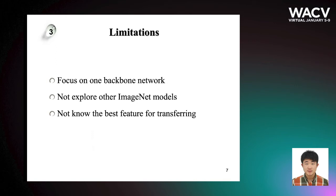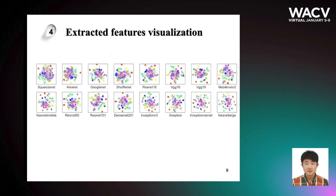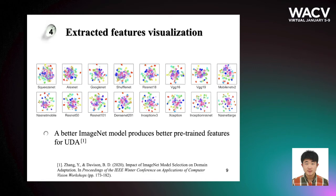In order to mitigate those limitations, in our paper, we first extract features from 16 neural networks based on our prior knowledge that a better ImageNet model produces better pre-trained features for UDA. However, how to find the best feature pair for two domains is a problem.